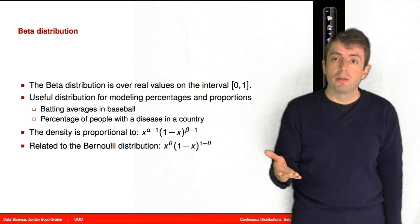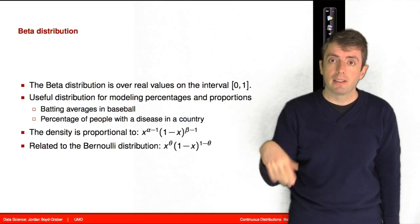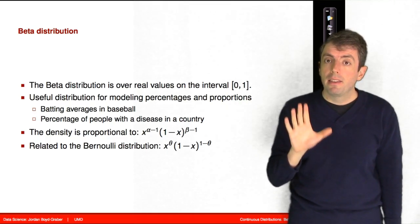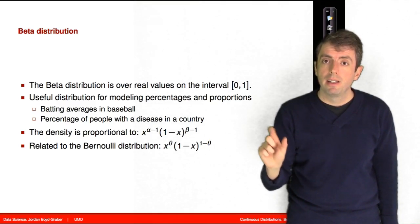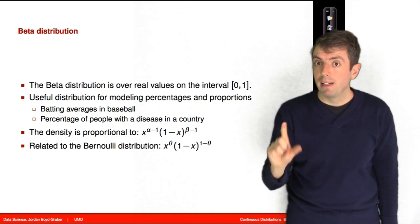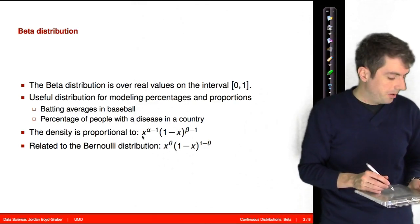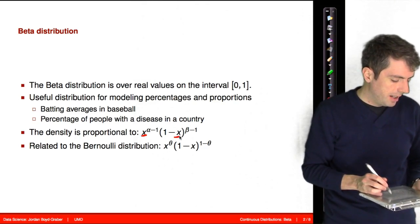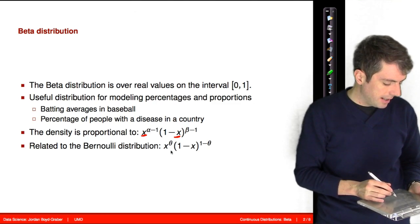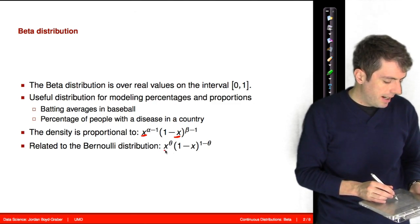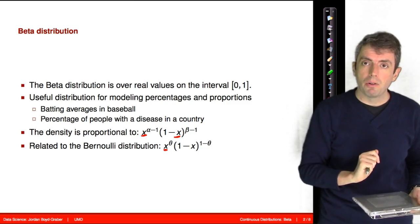The density function of the beta distribution is x to the alpha minus 1 times 1 minus x to the beta minus 1. This looks a lot like the density function of the Bernoulli distribution. But it's important to keep what we're modeling straight. In the beta distribution, we have a density over a continuous value, so x can be anything between zero and 1, whereas in the Bernoulli distribution x is either 0 or 1 — it's over discrete outcomes.